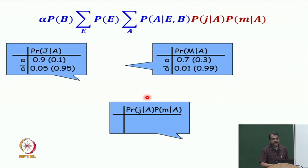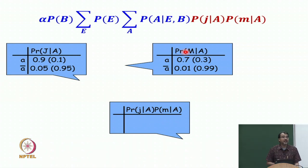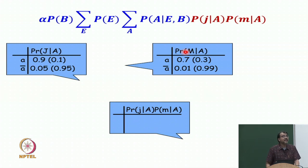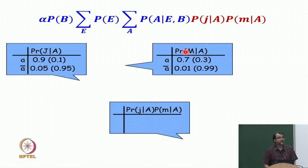Next, we compute sum over E of P(E) × P(B) × F2(B, E). Because E has been summed away, this is a function of B — call it F3(B). Each term is a product of three factors: for example, 0.6 × 0.001 × 0.002 for one configuration, and 0.59 × 0.998 × 0.001 for another, and so on. We get the final function F3(B). That gives us alpha × F3(B).